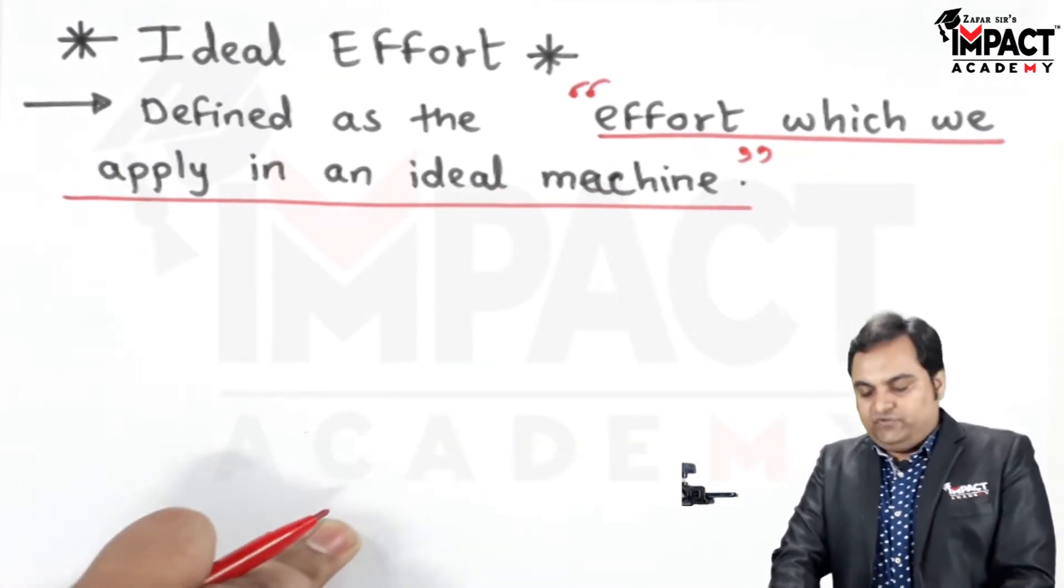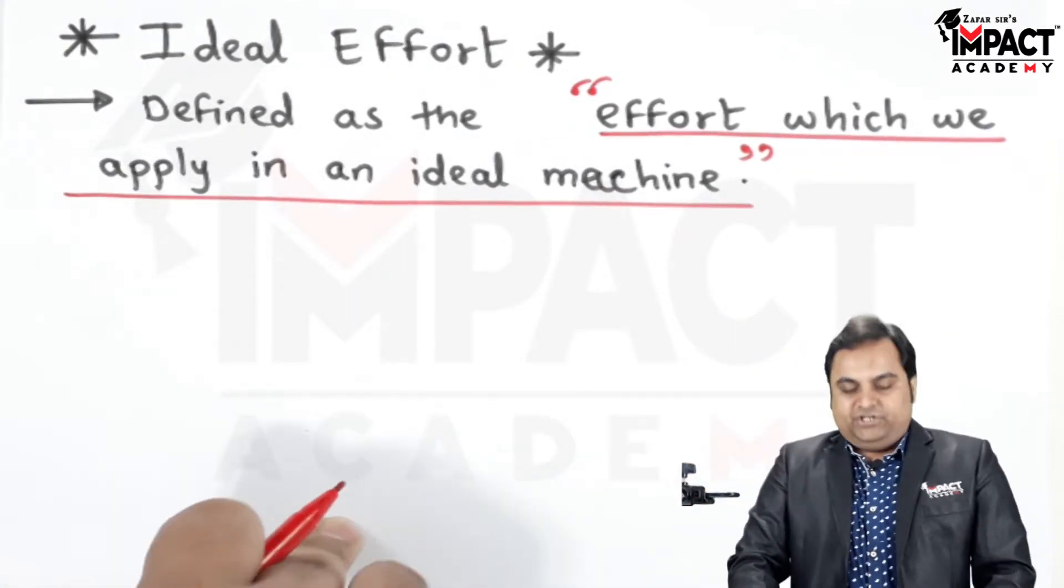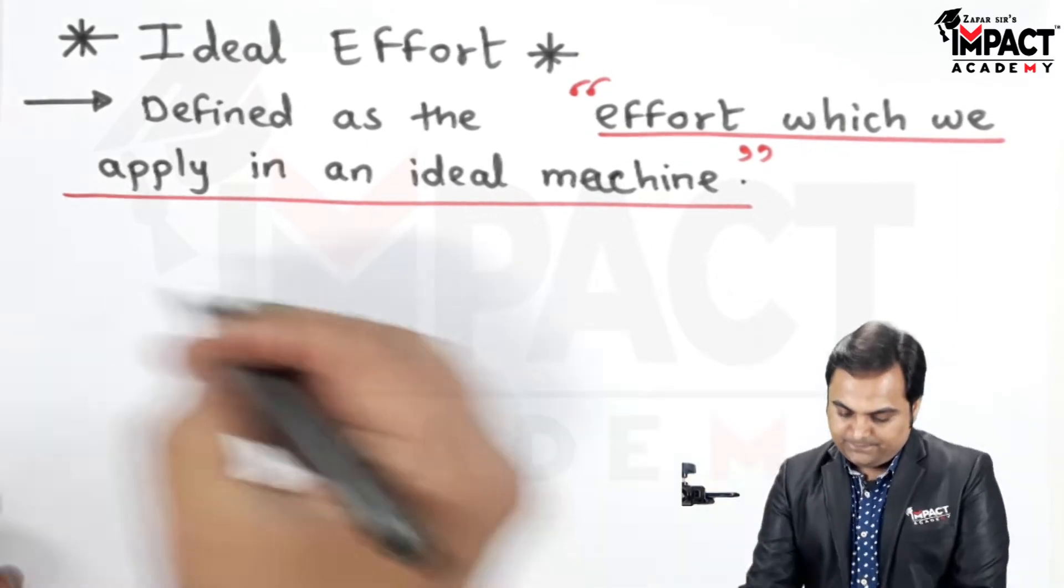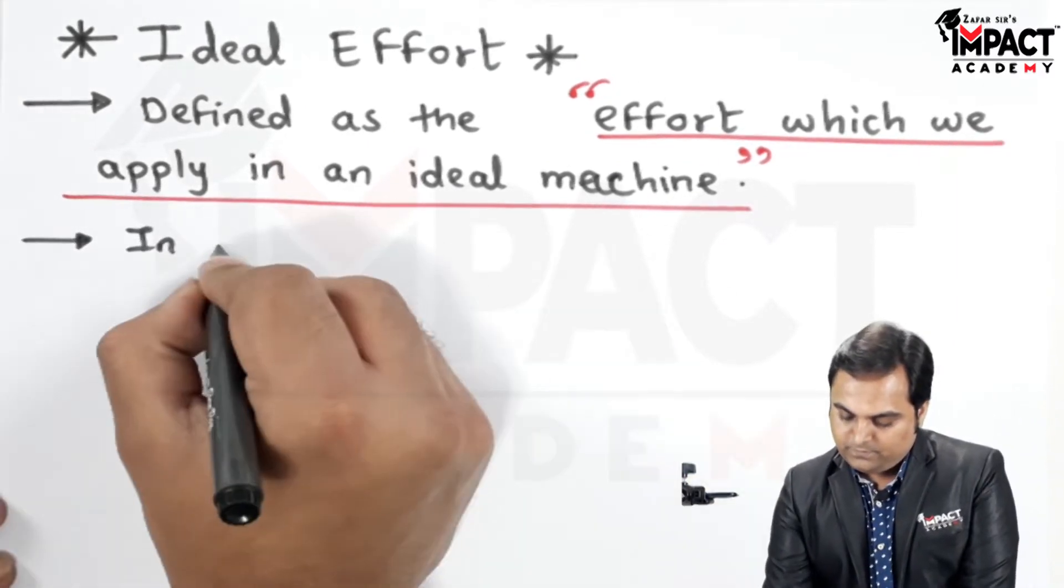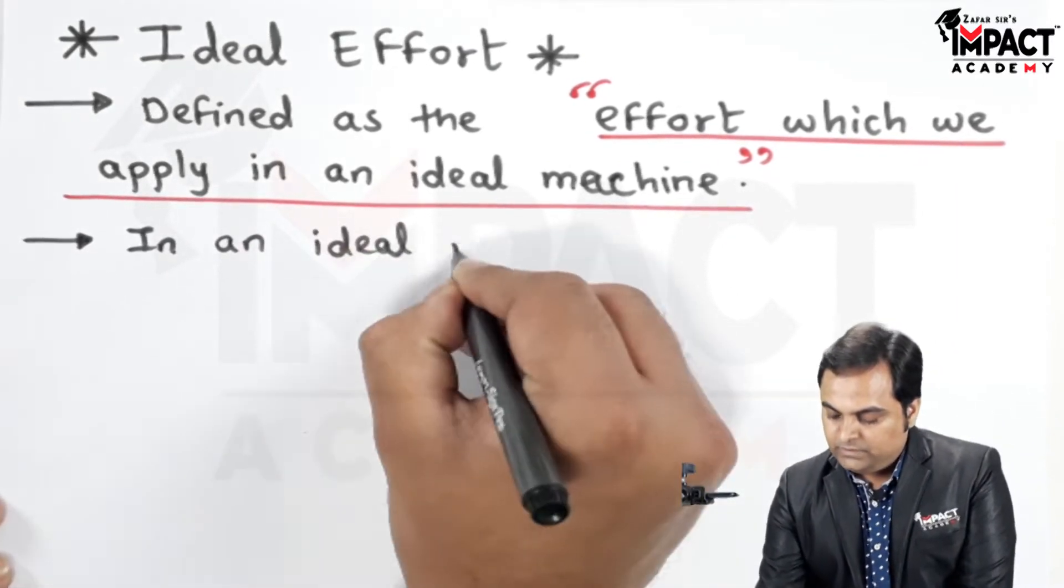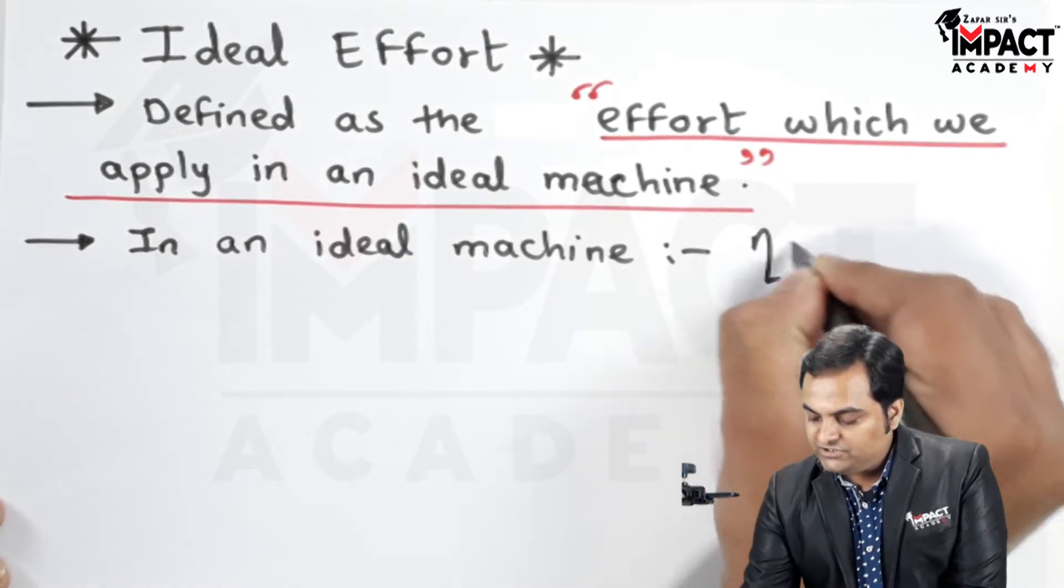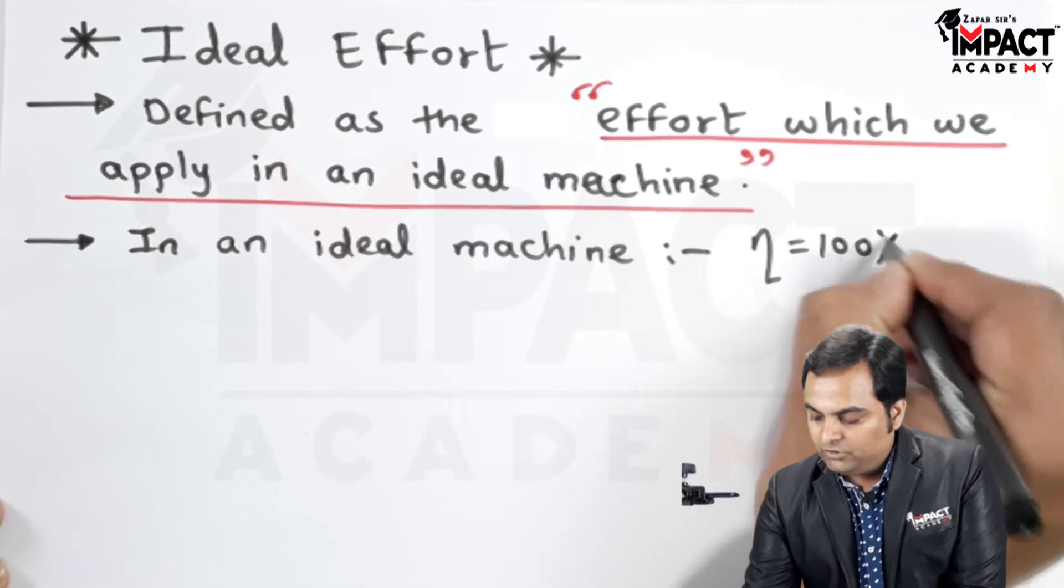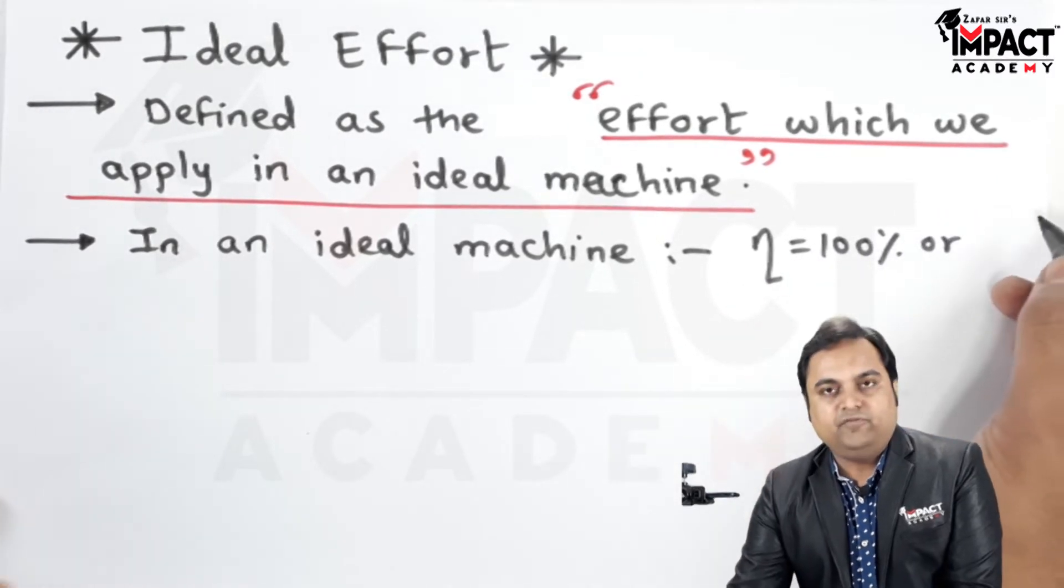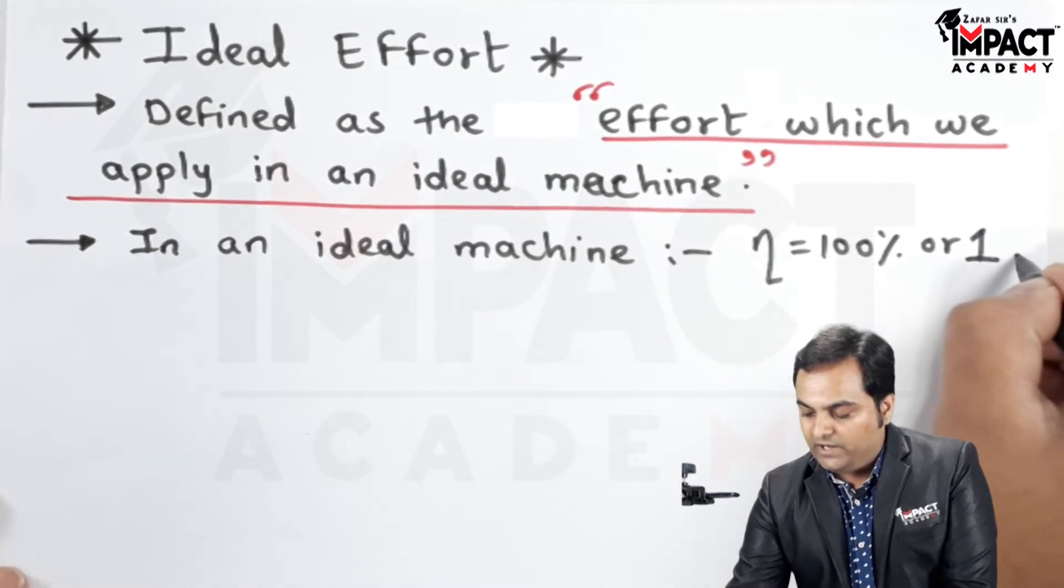It is the effort which we apply in an ideal machine, and in an ideal machine the efficiency is 100%, or in number if we want to express it, that would be 1.